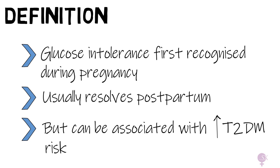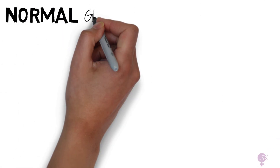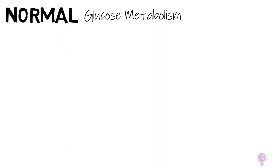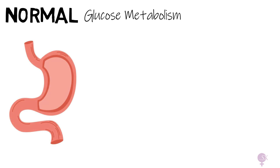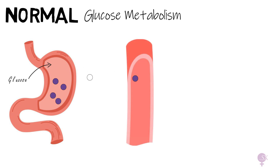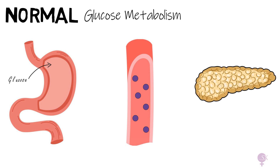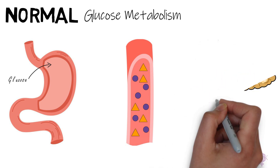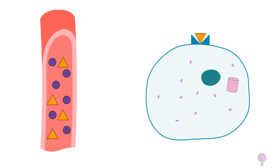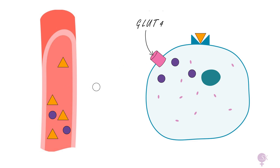Before we can understand what's going on in gestational diabetes, let's recap a bit on normal glucose metabolism. Glucose is obtained from the food we eat, which ends up in our GI tract and then enters the bloodstream. This rise in blood sugar stimulates the pancreatic beta cells to produce insulin, a hormone which helps to move glucose from the blood into the cells via the GLUT4 transporter, therefore lowering blood sugar levels.